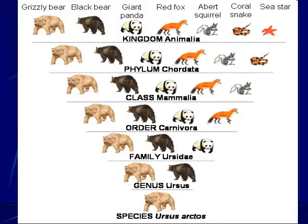For example, kingdom Animalia includes all animals — from sea stars to grizzly bears to red foxes. Narrowing to phylum Chordata, those with notochords, the sea star is gone. Narrowing to class Mammalia — mammals — the snake is gone because it's a reptile. Order Carnivoria removes the squirrel. Then we get to family Ursidae, the general bear family, then genus Ursus, the true bears, and finally the genus-species name Ursus arctos, the brown bear.